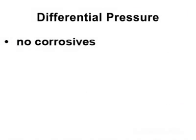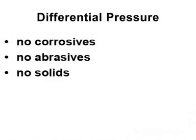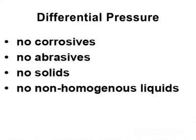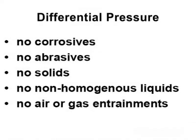Corrosive fluids, abrasive fluids, fluids that contain solids, and fluids that are not homogeneous and mixed are not good fluids for a differential pressure flow measurement application. Neither is the existence of significant air or gas entrainment in the flow. Diaphragm seals and other workarounds can be used, but they tend to cause significant negative effects on transmitter accuracy.